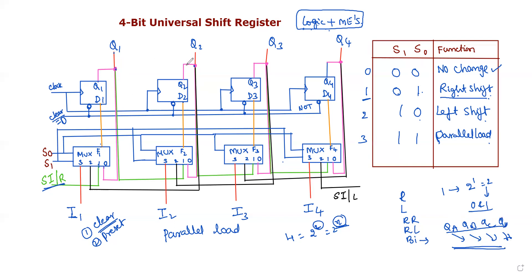The right-shifting operation involves serial-in serial-out, serial-in parallel-out (SISO, SIPO), and also PISO and PIPO types of data transmission. There are four types of operations depending on our application. For left-shift operation, the selection input is 1-0. In left-shifting, the right-most flip-flop receives the serial input data through the multiplexer's second pin. The same data is fed as left-shifting data.